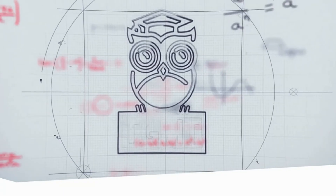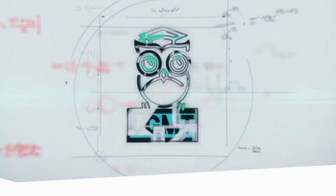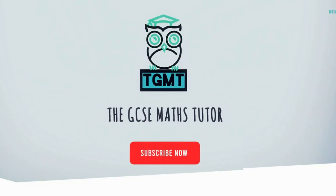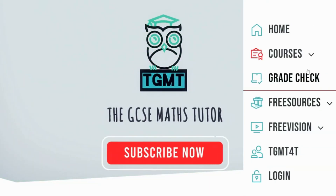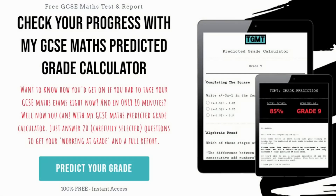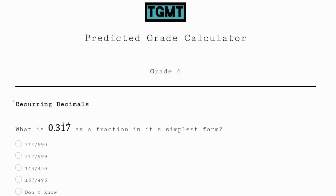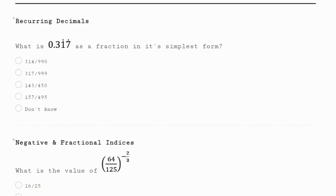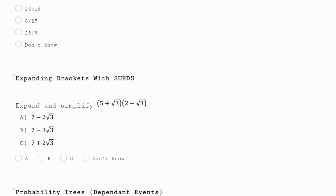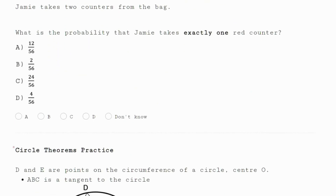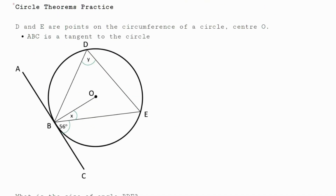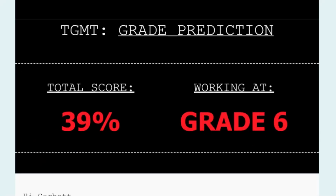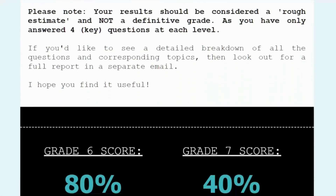Tip one: my grade calculator. Go to my website and complete my grade calculator to get your estimated working at grade, so you can get an idea of your starting point. You'll be able to answer common exam style questions from either of the exam tiers — higher or foundation — and once you've completed that, you will receive a report which gives you that estimated working at grade, so you can start to look at your next steps.